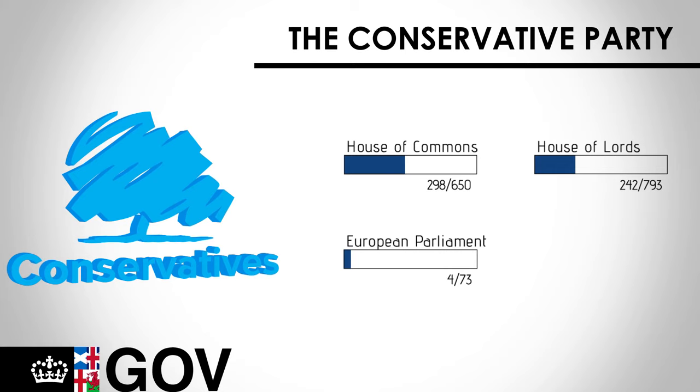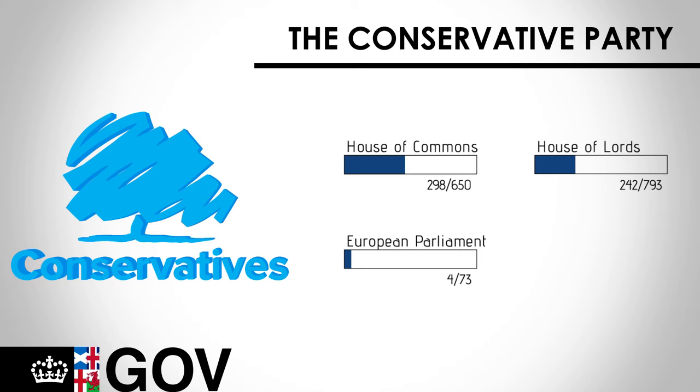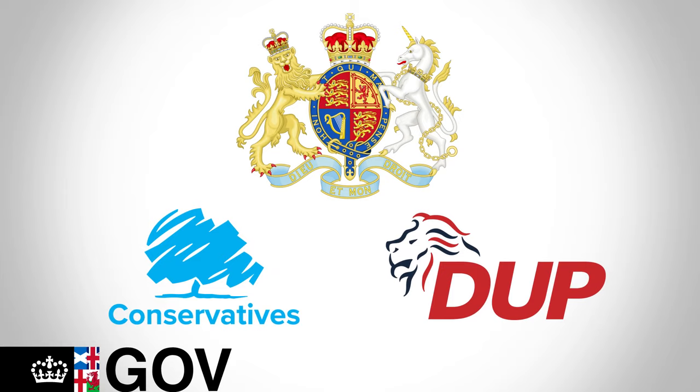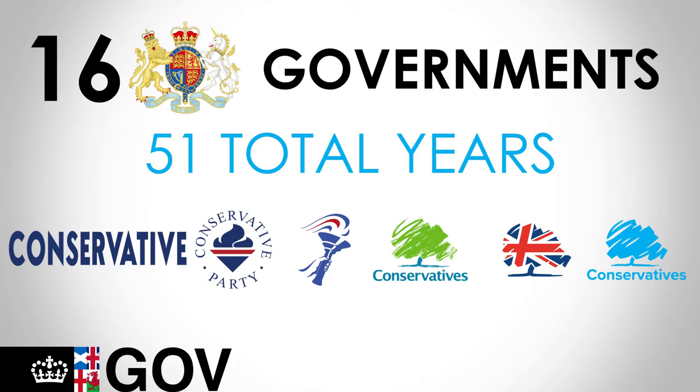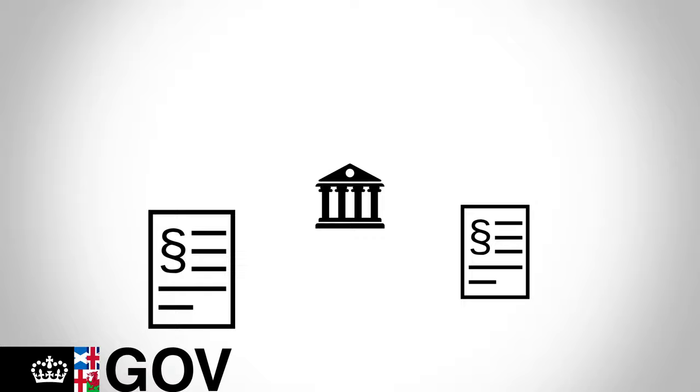The Conservative and Unionist Party, also known as the Conservatives or the Tory Party, is a national conservative party currently operating as the minority government, supported in a confidence and supply agreement by the Democratic Unionist Party of Northern Ireland since 2017. The Conservative Party was founded in 1834 and has been one of the two largest political parties in the UK since then. The party has governed 16 separate times, including for 51 total years in the 20th century under Prime Ministers such as Winston Churchill and Margaret Thatcher. The party has a fairly diverse ideological base containing both social conservatives and social liberals and varying degrees of economic liberalism.